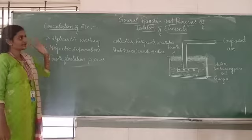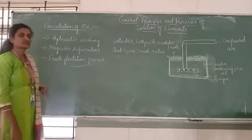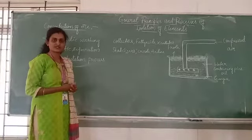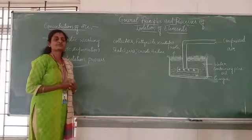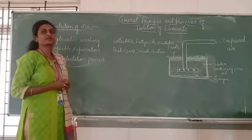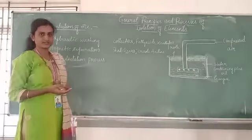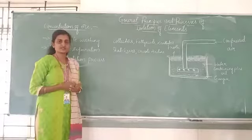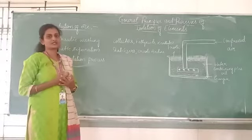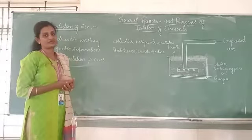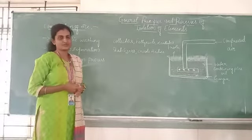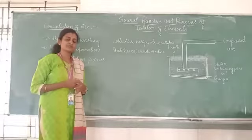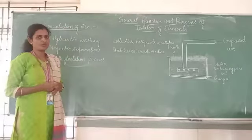In the metallurgical process we have three steps: first, concentration of the ore; second, extraction of the crude metal from the concentrated ore; and third, purification or refining processes. We are currently on the first step — concentration of the ore.